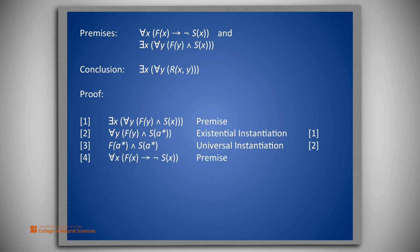let's introduce the first premise onto line 4. We have, for all x, f of x implies not s of x. On line 5, we universally instantiate line 4 with x being replaced by a star again. This results in f of a star implies not s of a star.